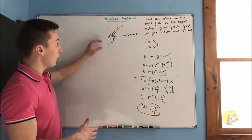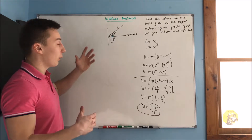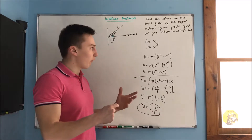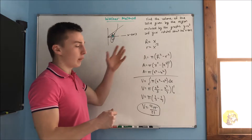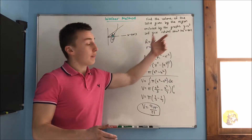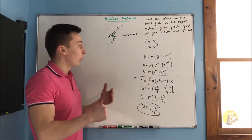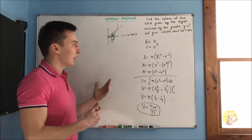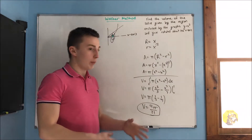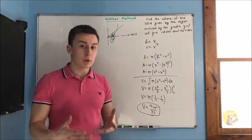It is pretty simple because we are not going to have to do anything different with our radii — they are just going to be what the graphs that we were given are. That is not too difficult, but the next problem you are going to get something a little more challenging.